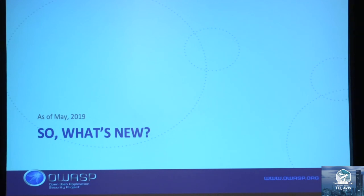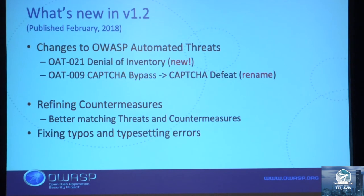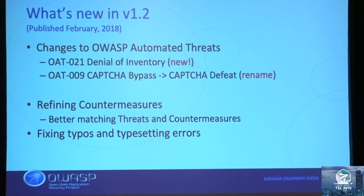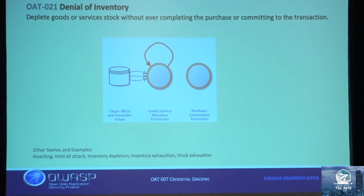As of 2019, we published the latest version 1.2 of the book about a little more than a year ago. We added the new threat category of denial of inventory, renamed one category, and did some cleanup of typos and clarifications on how we describe some of the countermeasures.